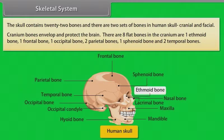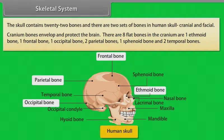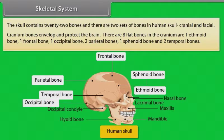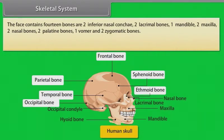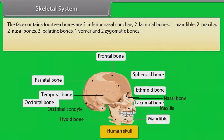There are 8 flat bones in the cranium: 1 ethmoid bone, 1 frontal bone, 1 occipital bone, 2 parietal bones, 1 sphenoid bone, and 2 temporal bones. The face contains 14 bones: 2 inferior nasal conchae, 2 lacrimal bones, 1 mandible, 2 maxilla, 2 nasal bones, 2 palatine bones, 1 vomer, and 2 zygomatic bones.